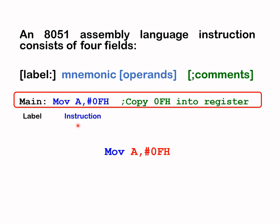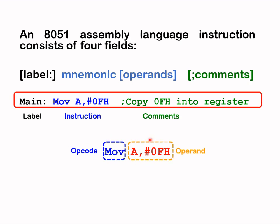Looking at the first instruction: here is the label, here is the instruction, and these are the comments. The 8051 assembly language instruction consists of four fields. The mnemonic is also known as the op code, or operation code. The operand is divided into two parts — the destination and the source. In this instance, the source is the data and the destination is register A.